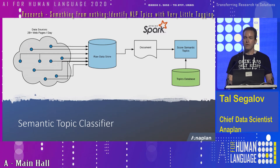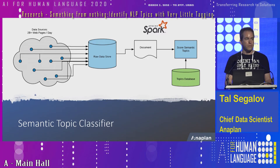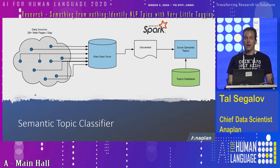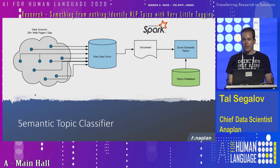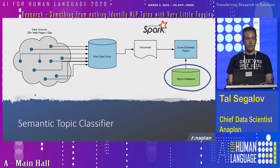Those topics can be very, very fine-grained. For example, they can be about Rockwell industrial automation, or about sales planning technology, or about deep learning, or about IoT and industrial applications. We have many thousands of those. The key challenge here is how to efficiently create, maintain, and expand this topic database.